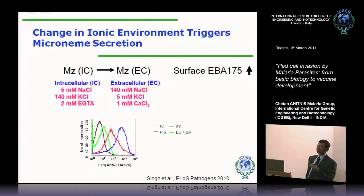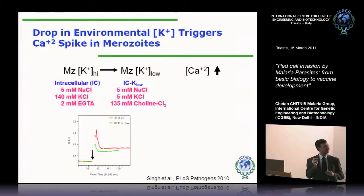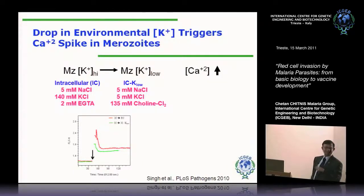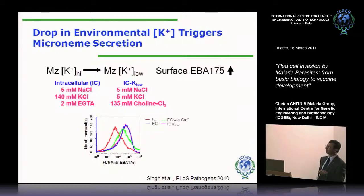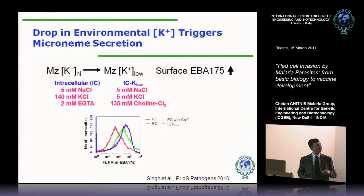The next question is which of these three ions is really the signal — sodium, potassium, or extracellular calcium? It turns out what the parasite is sensing is just potassium. If you switch from IC to ICK-low, where sodium remains the same and you only change potassium from high to low, with no extracellular calcium present, just changing the potassium ion concentration from high to low leads to an increase in intracellular calcium and also to microneme release. That means the calcium is coming from intracellular stores.